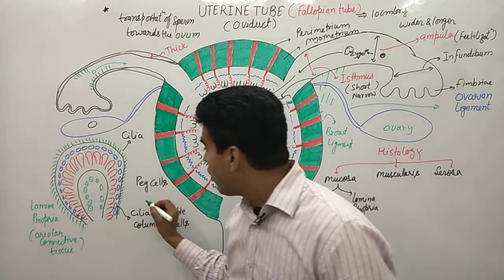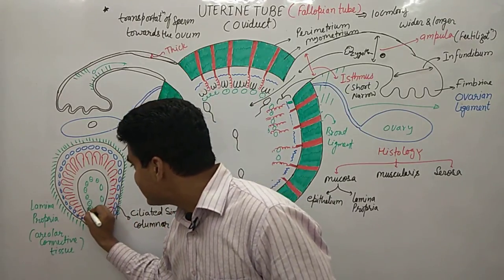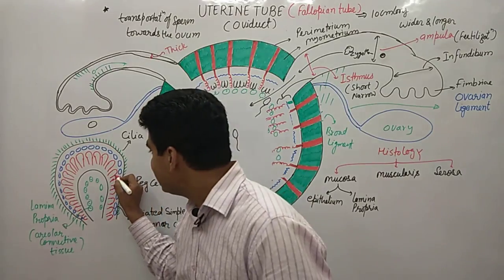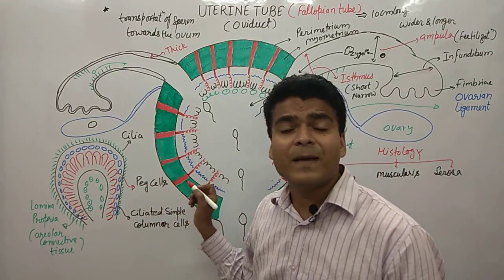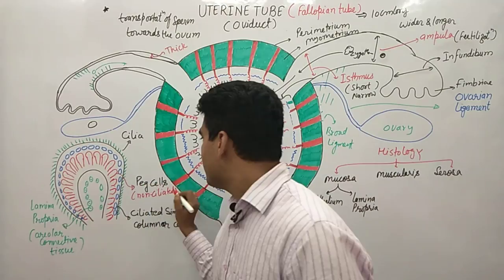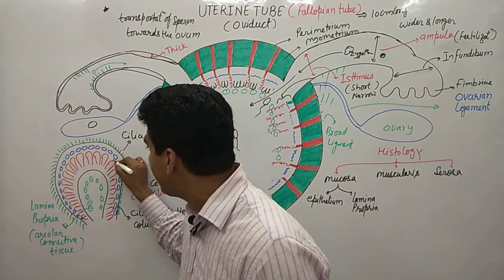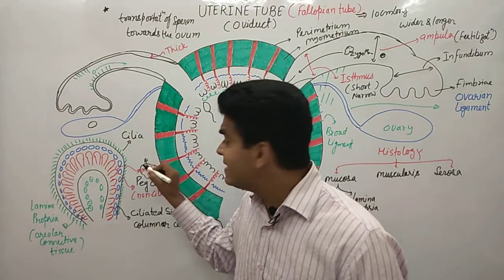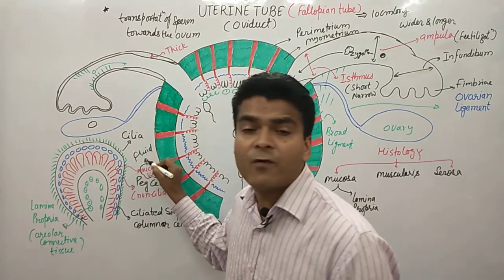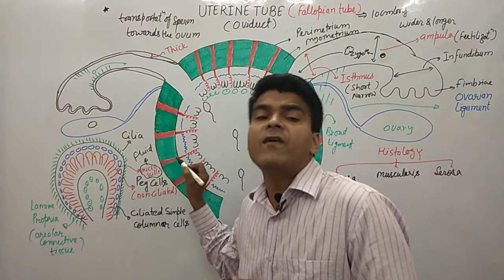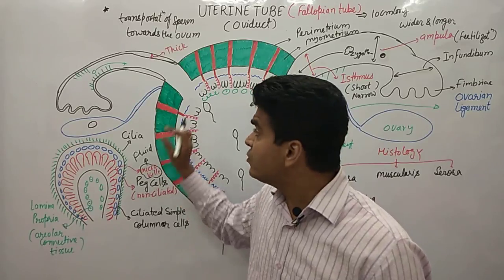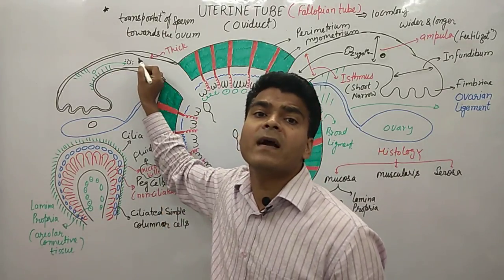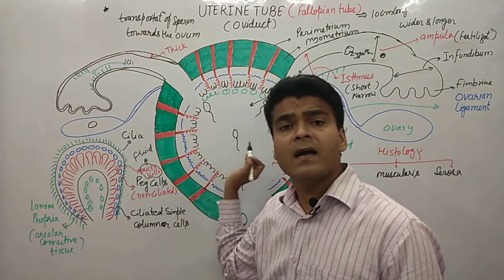We also find lamina propria and some other cells called peg cells. Peg cells are non-ciliated but they contain microvilli. The microvilli release a fluid, and this fluid helps in the nutrition of the fertilized ovum. So peg cells provide nutrition to the fertilized ovum, while cilia help move the fertilized ovum toward the uterus.